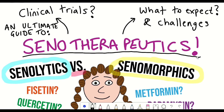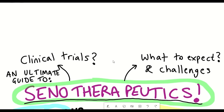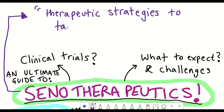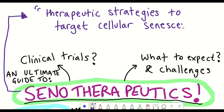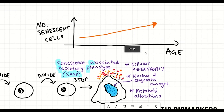An obvious beginning for the ultimate guide would be a definition of what senotherapeutics is. Senotherapeutics refers to the development of therapeutic strategies to target cellular senescence that could have benefits for aging and age-related diseases. This is because cellular senescence and the increase in senescent cells with age are thought to be contributing to aging and age-related diseases.